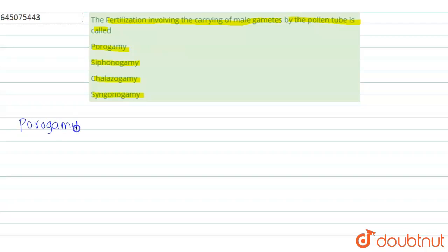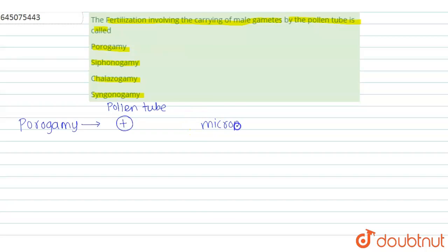Porogamy is a type of fertilization in which the pollen tube is formed. The pollen tube carries the male gametes, and the male gametes are released at the micropyle. Whenever the pollen tube leaves via the micropyle, that process is called porogamy.